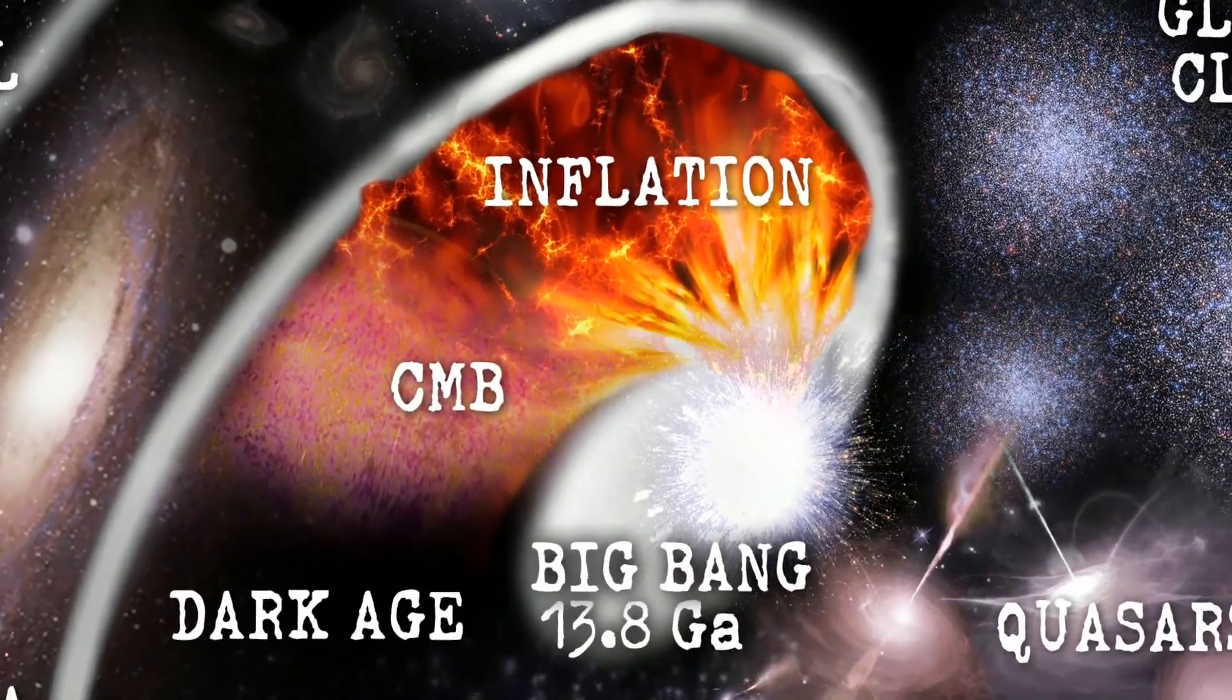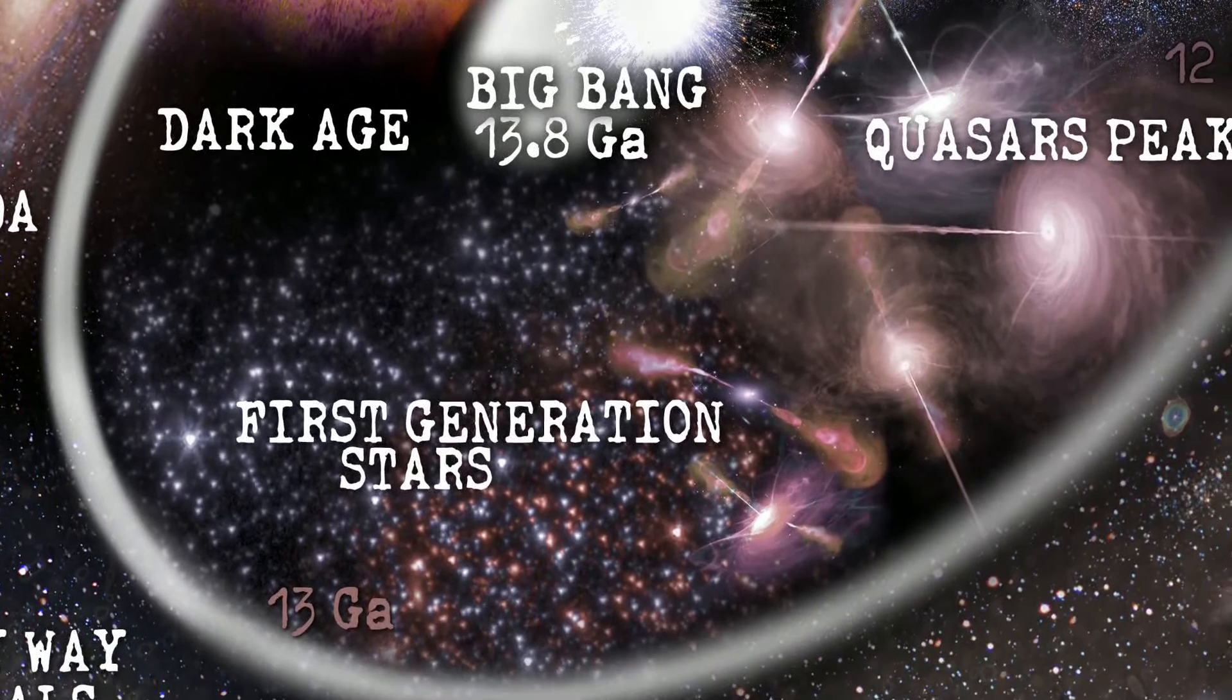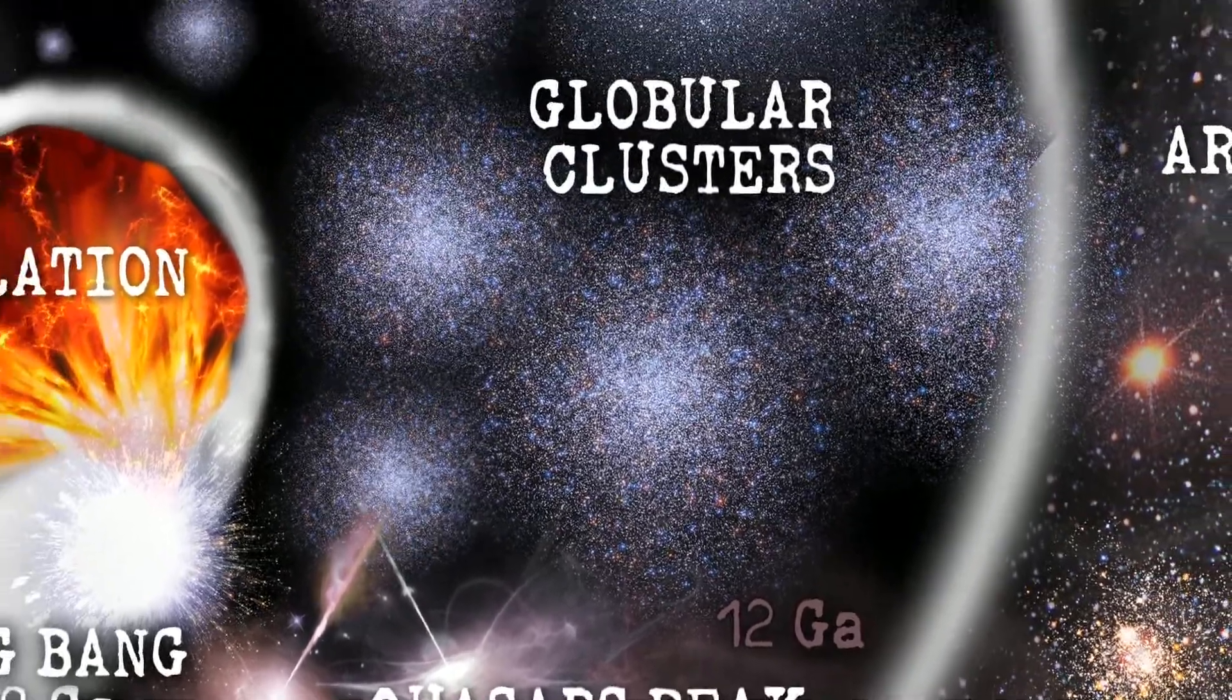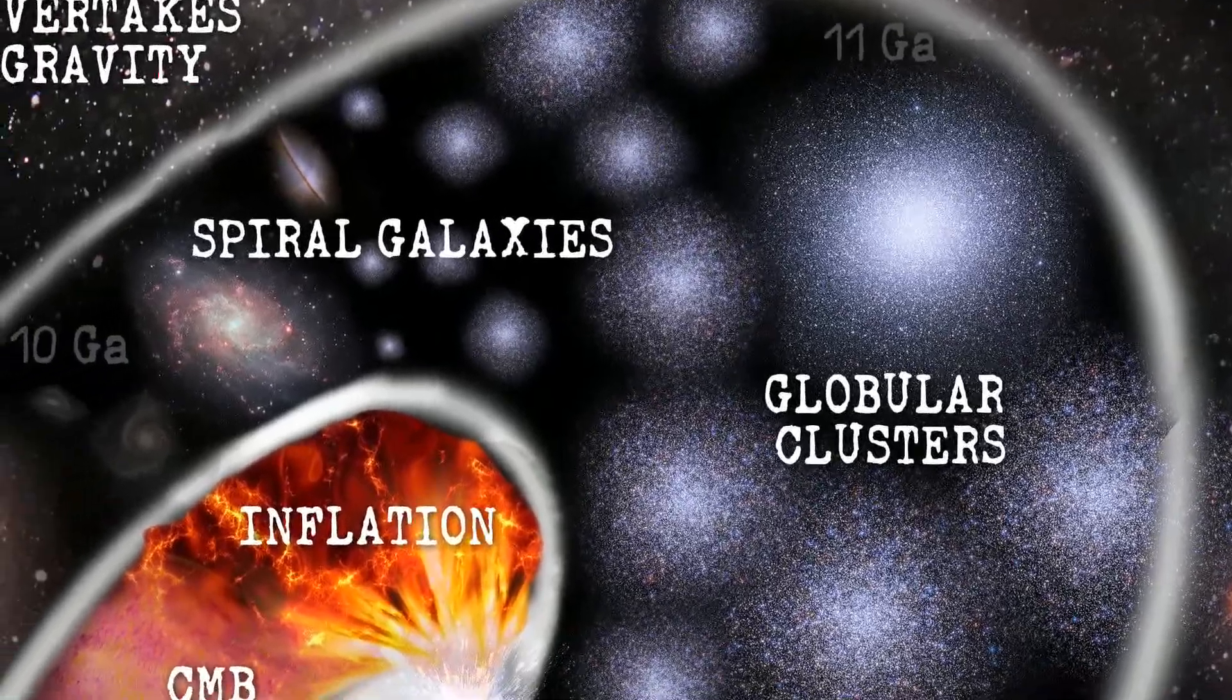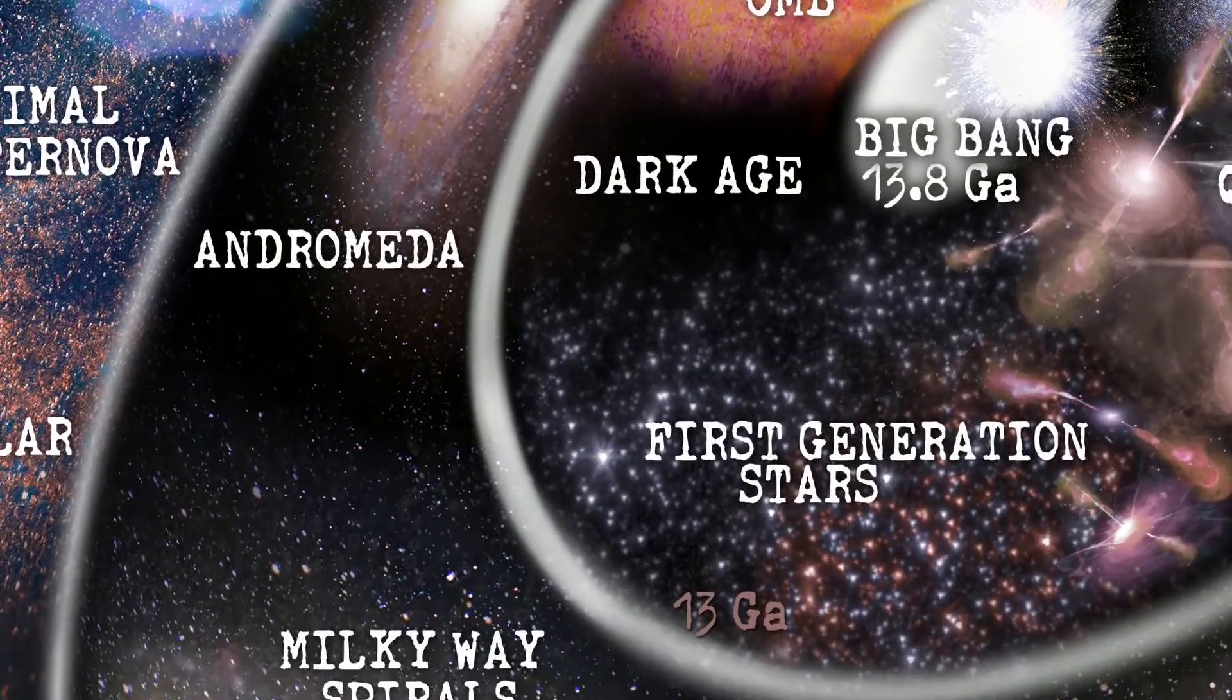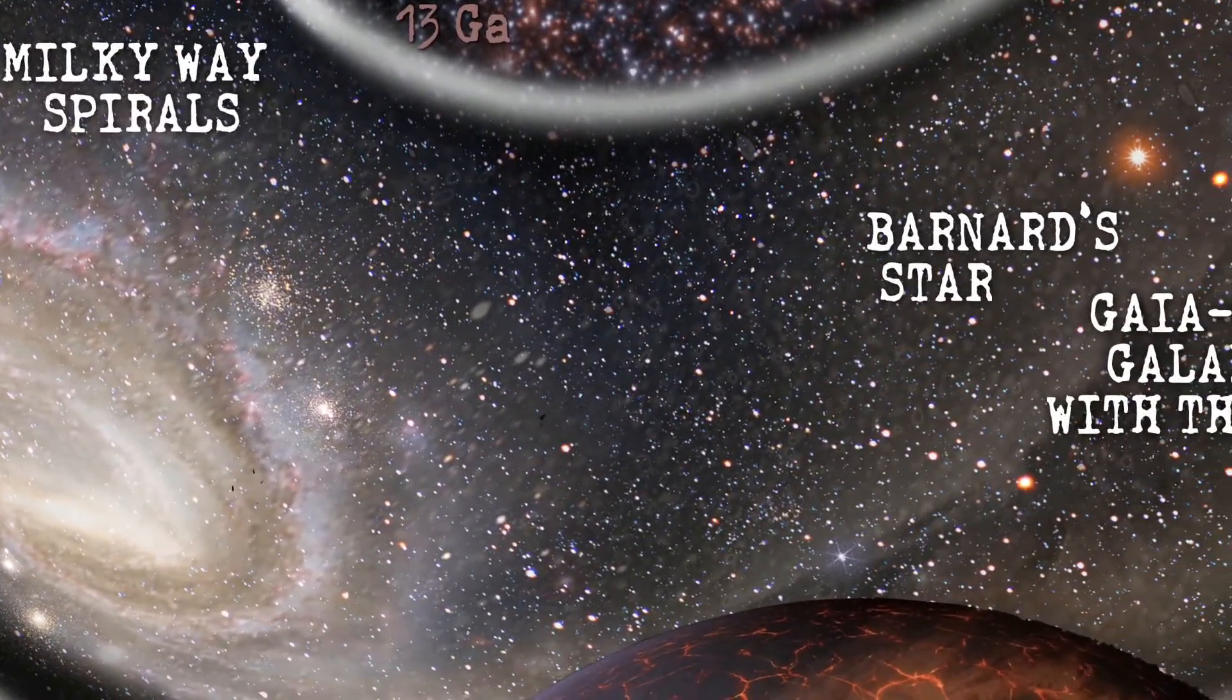The Big Bang, inflation, CMB, dark age, all happens very quickly, the Big Bang. The first generation stars, the quasars peak, the earliest globular clusters, spiral galaxies, one form of galaxies, and the Andromeda galaxy, Milky Way spirals. We're now zooming into our home, the Milky Way.